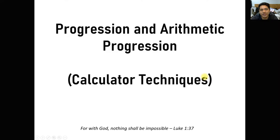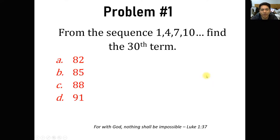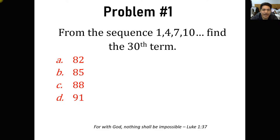We have several basic problems here that we will be solving. For number one, we have from the sequence 1, 4, 7, 10, and so on — find the 30th term. If you notice, this is an example of an arithmetic sequence, arithmetic progression, because there is a common difference between adjacent numbers: 10 minus 7 is 3, 7 minus 4 is 3, 4 minus 1 is 3.